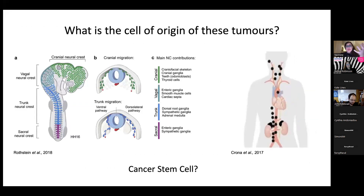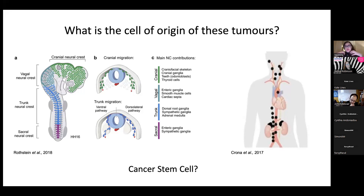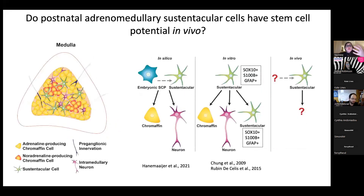The question we'd like to answer is: what is the cell of origin of these tumors - is it a cancer stem cell? Going back to development, both the paraganglia and the adrenal medulla derive from an embryonic migratory cell population: the neural crest. The tumors also seem to be located along the neural crest migratory route. The adrenal medulla is composed of adrenaline-producing chromaffin cells, preganglionic innervation, intramedullary neurons, and a population of glial-like sustentacular cells.